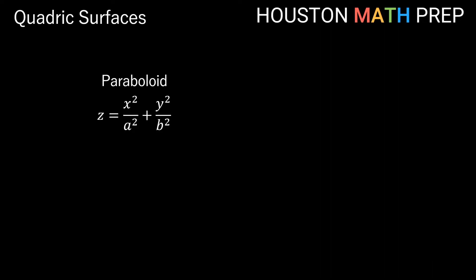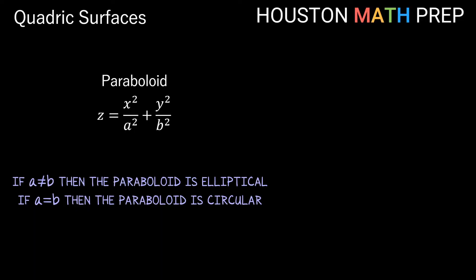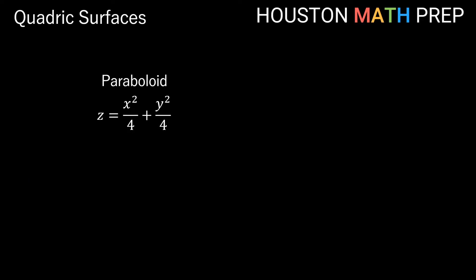Another quadric surface, the paraboloid, has a name that hints at its shape. The form has only two variables in quadratic terms and the third in a linear term, with the linear term by itself on one side and the quadratic terms — having the same sign — on the other. Just like with cones, if constants a and b are the same, the paraboloid is circular; if not equal, it's elliptical. In our circular paraboloid example, a² and b² are both four.